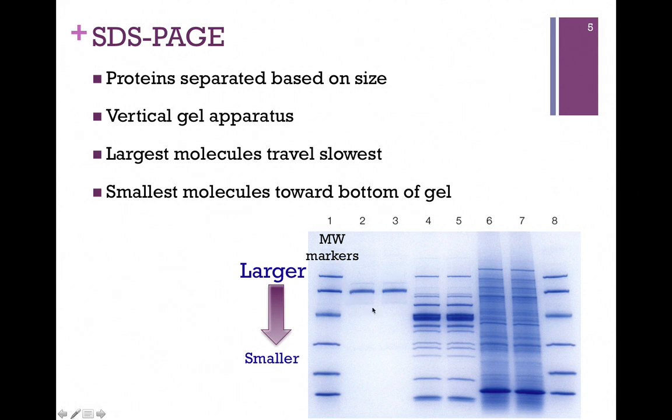So we can determine the size in this way. We can also see the relative purity. Look at lanes 2 and 3. We almost have no other protein present, just the one protein band. However, in lanes 4 through 7, there's a mixture of proteins. The bands that stain more darkly are those that contain more protein. So in this method, we can determine how pure our sample is and get a relative ID of the size.